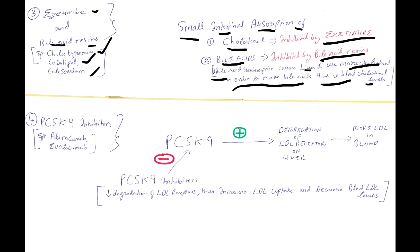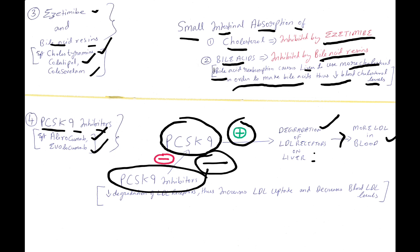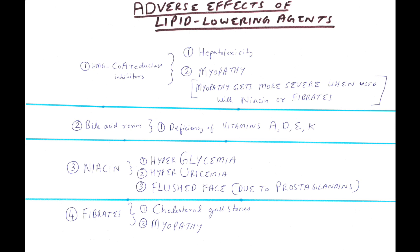Number four is PCSK9 inhibitors. Examples: alirocumab, evolocumab. What PCSK9 does is stimulate degradation of LDL receptors on the liver, hence there will be more LDL in blood. What PCSK9 inhibitors do is inhibit PCSK9, thus decreasing degradation of LDL receptors, increasing LDL uptake, and decreasing blood LDL levels.